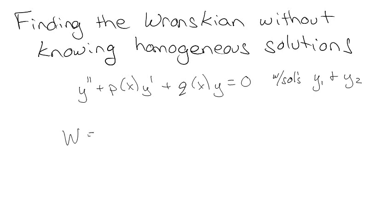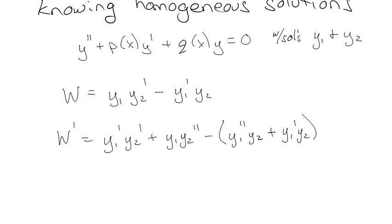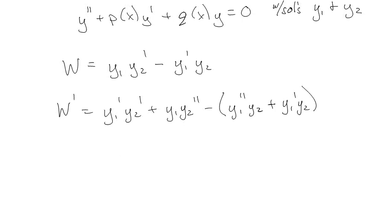We find the Wronskian as W = Y1·Y2' minus Y1'·Y2. Now let's take the derivative of the Wronskian. Using the product rule: Y1'·Y2' + Y1·Y2'' minus Y1''·Y2 minus Y1'·Y2'. If we distribute the negative, those two Y1'·Y2' terms cancel out, so the Wronskian derivative equals Y1·Y2'' minus Y1''·Y2.